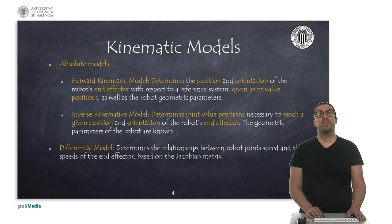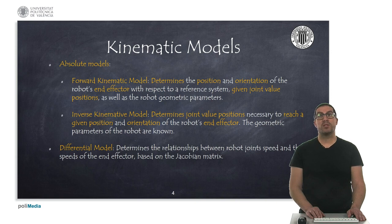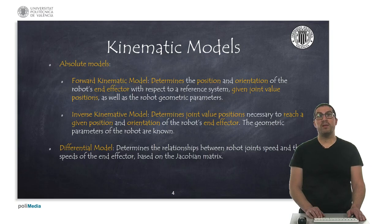We can distinguish two types of kinematic models, absolute and differential ones. The absolute models are expressed through absolute variables, such as joint angles or joint positions, or the position and orientation of the end effector, while in differential models there's a relationship at the level of velocities, whether linear or angular.